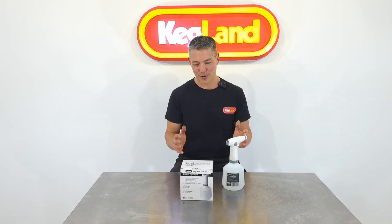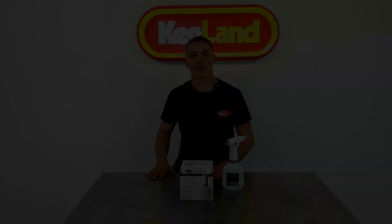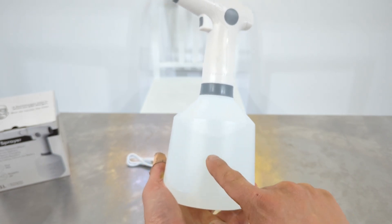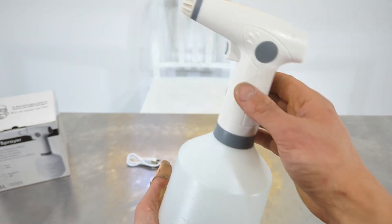Anyway, let me show you how to use this awesome little tool. So the sprayer looks like this. The bottle itself holds about one liter. As I was saying, it's got graduated markings up the side so you can see how much you're putting in there.